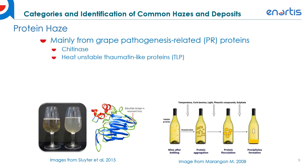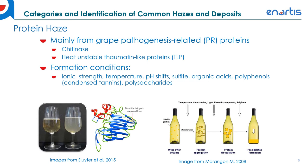With protein haze, this instability is mainly coming from grape pathogenesis-related PR proteins that include chitinase and heat-unstable thaumatin-like proteins, or TLPs. These proteins are quite resistant to endogenous proteases, mainly due to their structure, and can self-aggregate depending on formation conditions. Formation conditions include the ionic strength, temperature, pH shifts, presence of sulfite, organic acids, polyphenols, condensed tannins, and polysaccharides — all of which can influence the unfolding or refolding of these proteins, inducing aggregation and haze formation. This should be addressed early on with the addition of exogenous protease enzymes and fining, which we'll cover in more detail in part two.